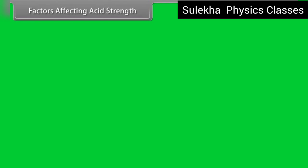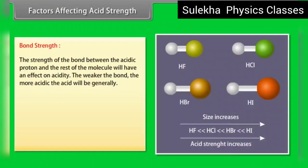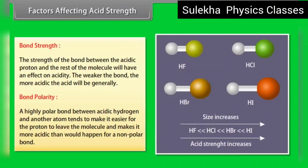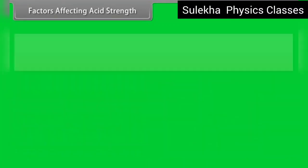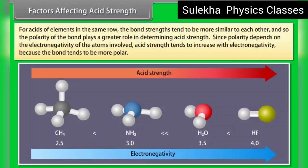Factors affecting acid strength. Bond strength: the strength of the bond between the acidic proton and the rest of the molecule affects acidity — the weaker the bond, the more acidic the acid. Bond polarity: a highly polar bond between the acidic hydrogen and another atom makes it easier for the proton to leave, making the acid stronger. For acids of elements in the same row, polarity plays a greater role in determining acid strength, and acid strength tends to increase with electronegativity.